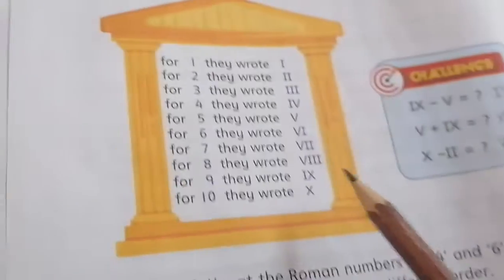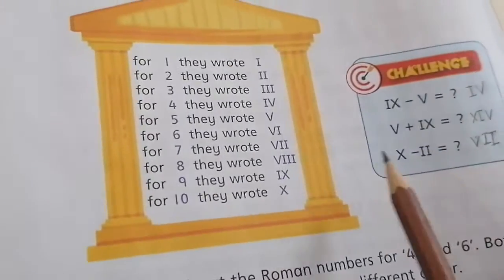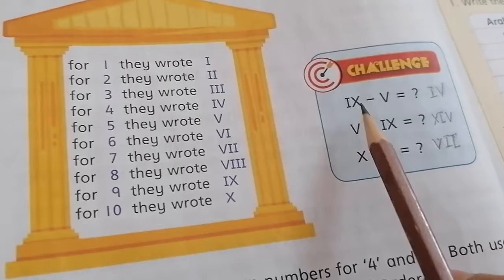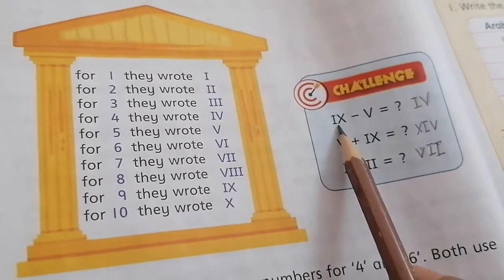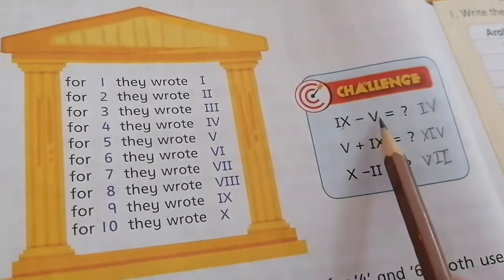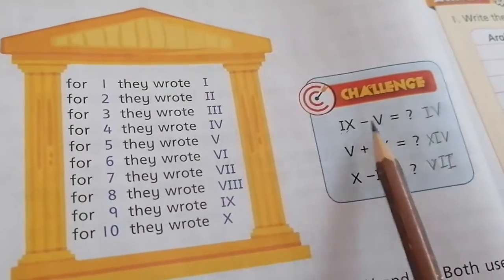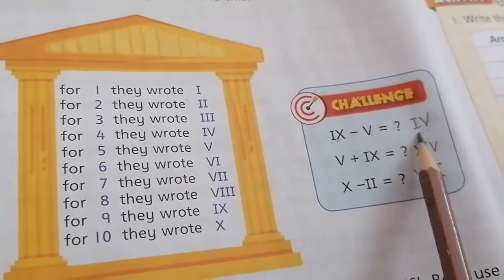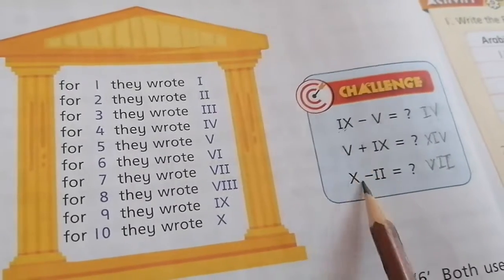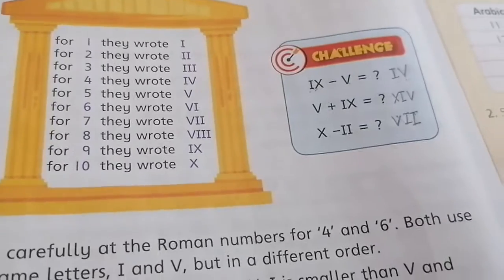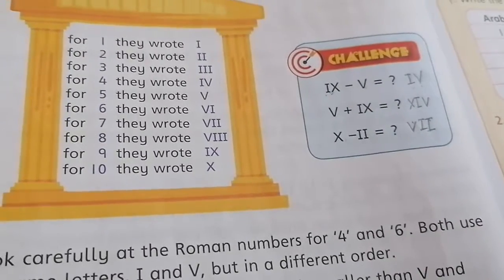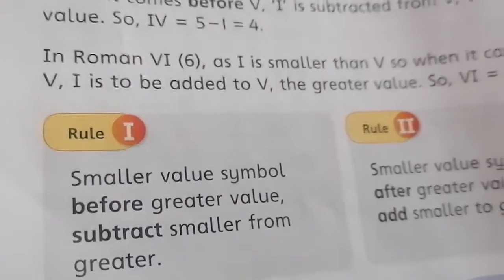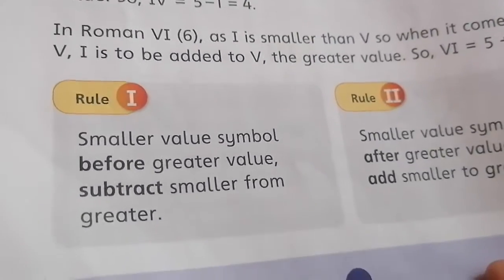Now come to the next page — page number four. There is an activity. We have a challenge they have given us. This number is used for 9. We will subtract 5 from 9 — what will we get? It will be 4. We will write the Roman numbers like this. You have to solve these two sums also. This is a challenge — to see whether you have understood or not. There are some rules which we have to follow and we will read them carefully on page number four.